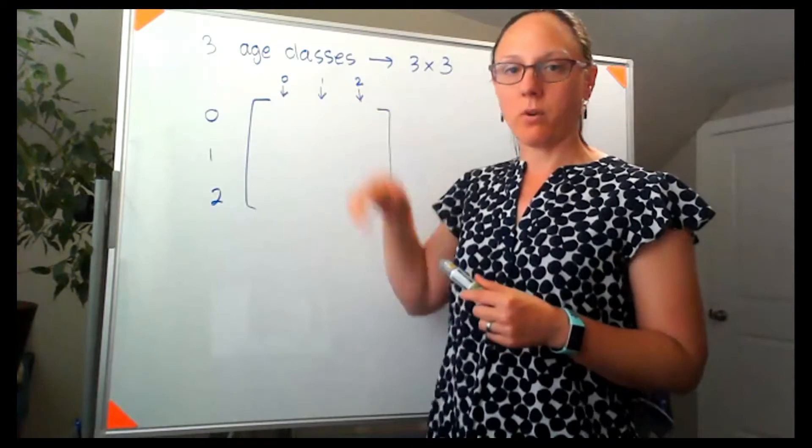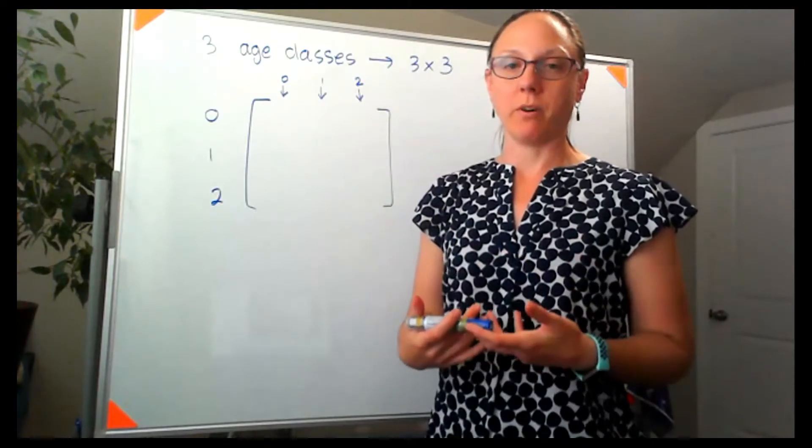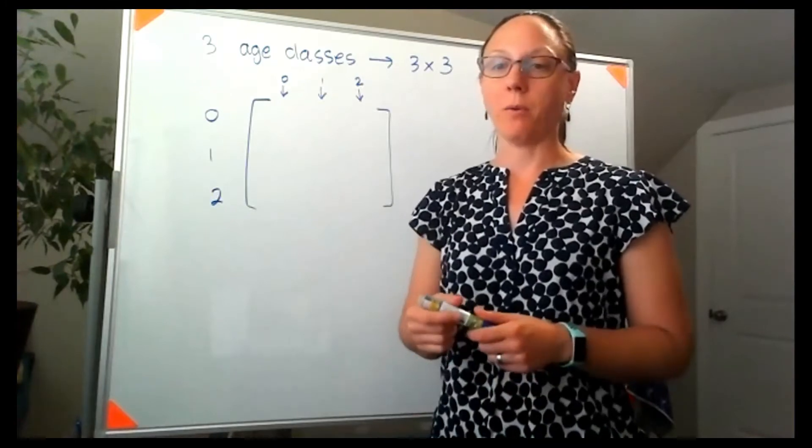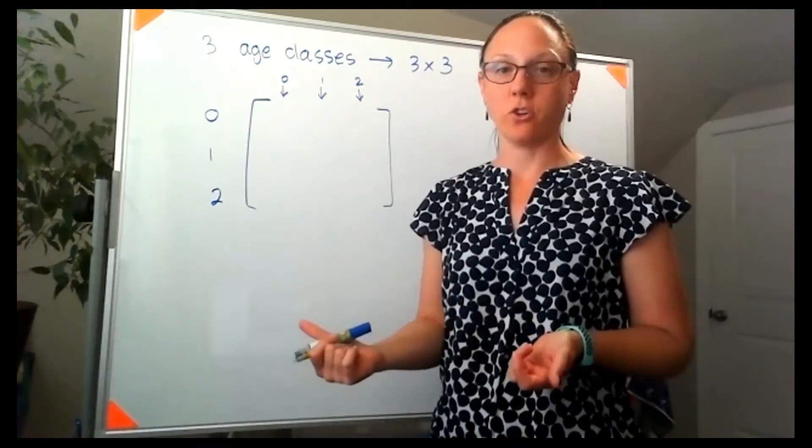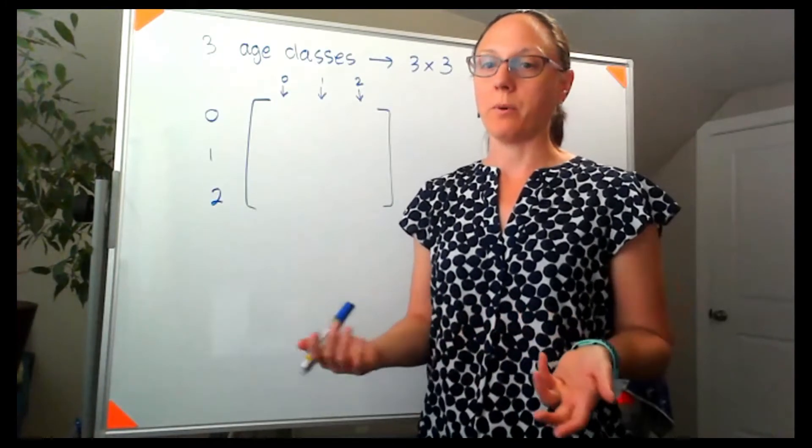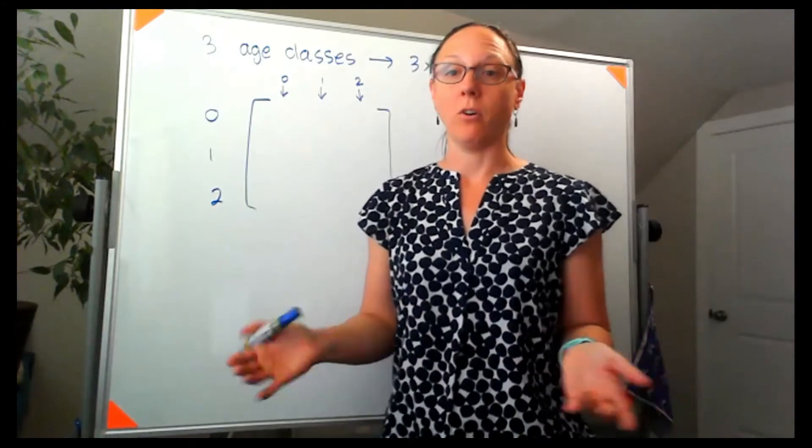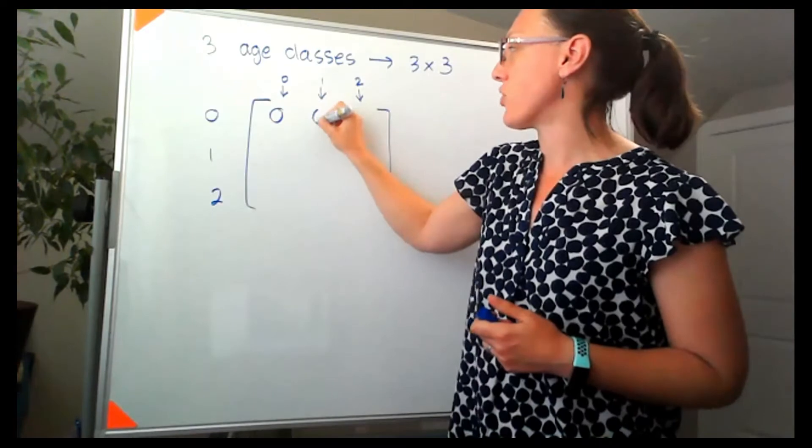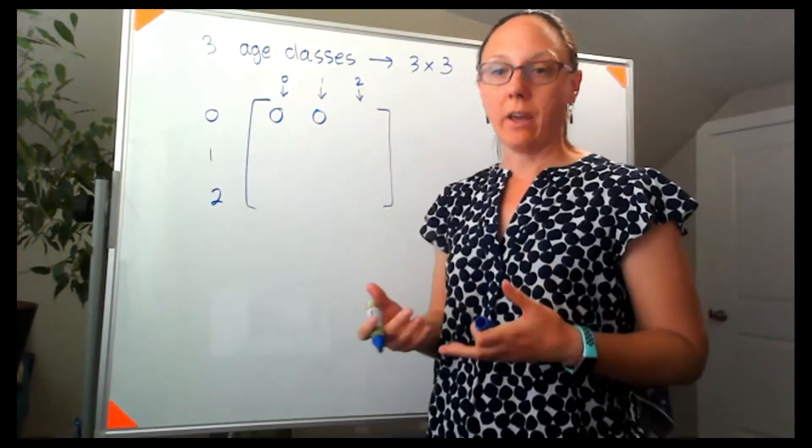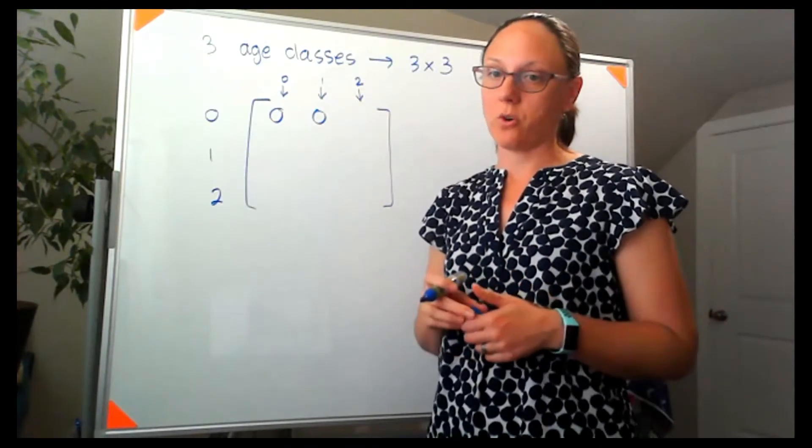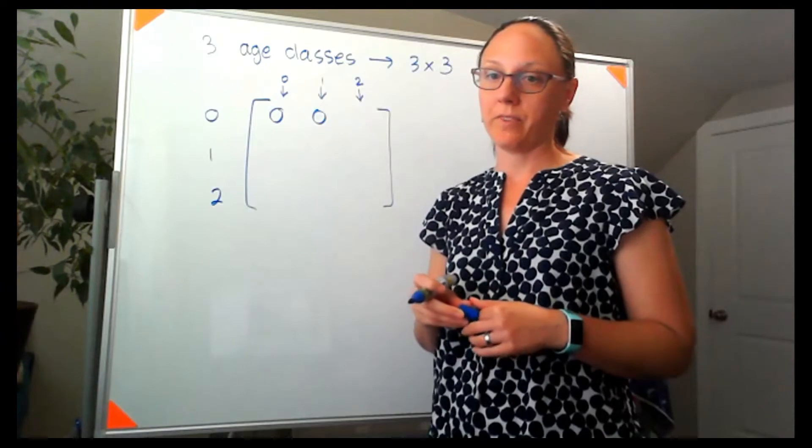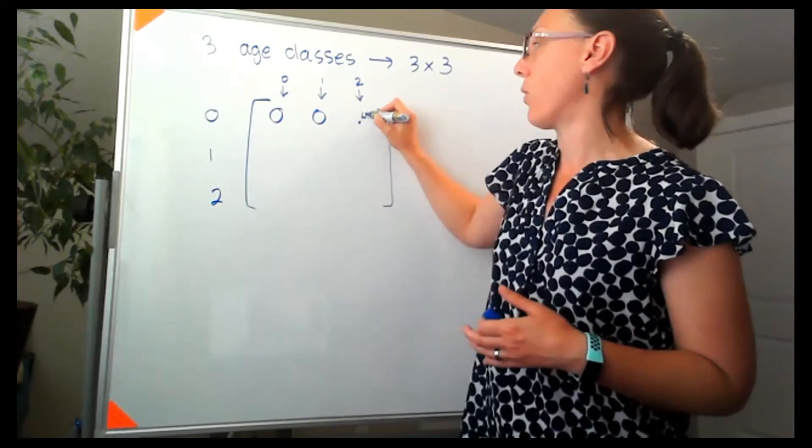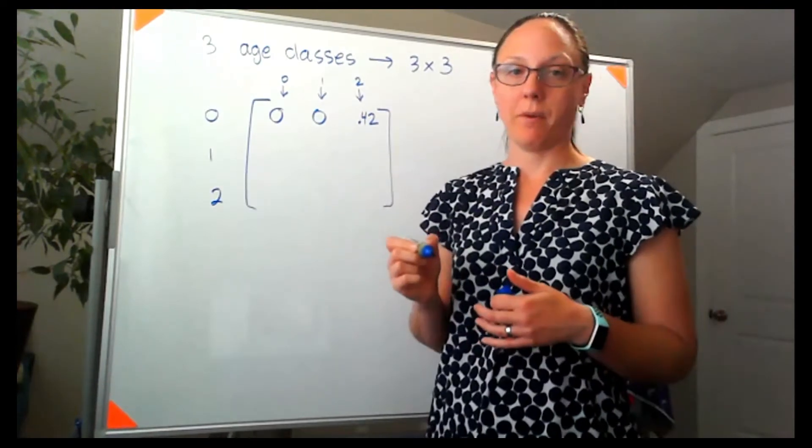So that top row represents the average number of offspring for each of the age classes. And in the problem we're told that only age class 2 females are reproductively viable, which means these two entries should be 0. Furthermore, we're told that those age 2 females on average produce 0.42 female offspring.